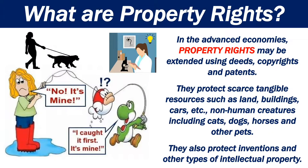In the advanced economies, property rights may be extended using deeds, copyrights, and patents. They protect scarce, tangible resources such as land, buildings, cars, etc., and non-human creatures such as cats, horses, dogs, and other pets. They also protect inventions and other types of intellectual property.